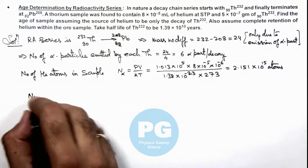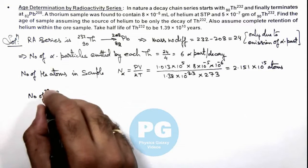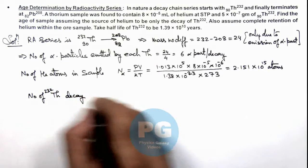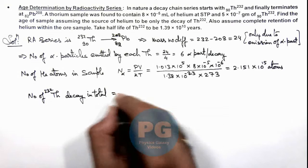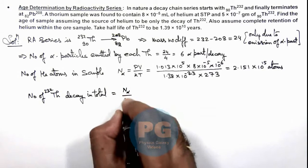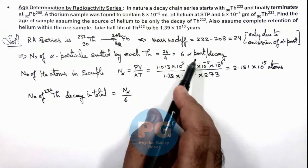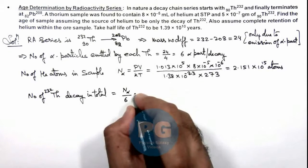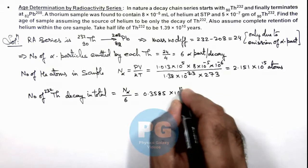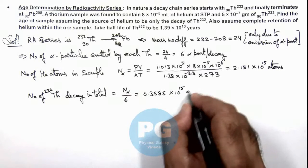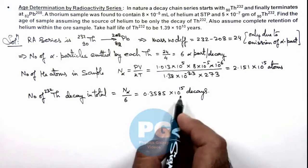So if we calculate number of thorium-232 decay in total, if we calculate it, this must be N_alpha divided by 6, because each thorium decay produces 6 alpha particles in the radioactive series. So here we divide by 6, this gives us 0.3585×10^15 decays. This much number of thorium decay have been occurred within this duration.